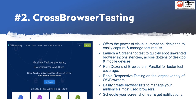The second tool is CrossBrowserTesting. It offers the power of visual automation designed to easily capture and manage test results. You can launch a screenshot test to quickly spot unwanted browser inconsistencies across dozens of desktop and mobile devices, run dozens of browsers in parallel for faster test coverage, and do rapid responsive testing on the largest variety of OS and browsers. You can also create browser lists, schedule tests, and get notifications.